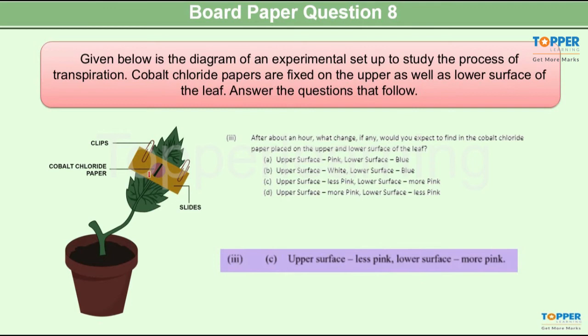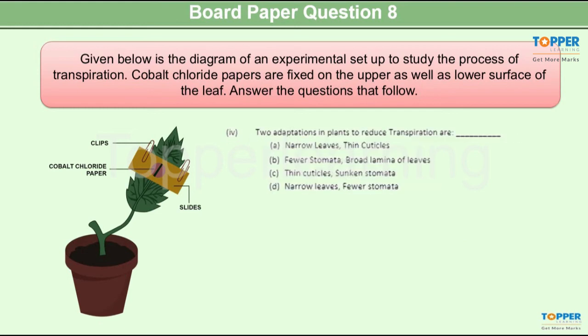Hence there is more transpiration and hence the cobalt chloride strip is more pink in color as compared to the upper surface of the leaf.